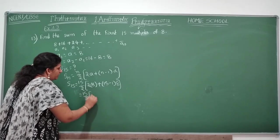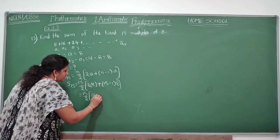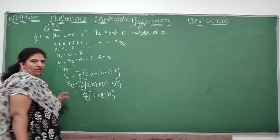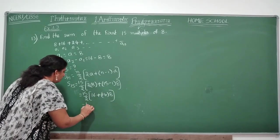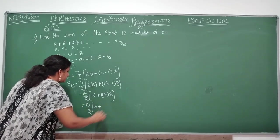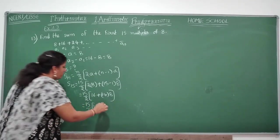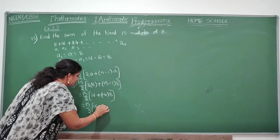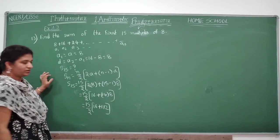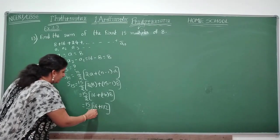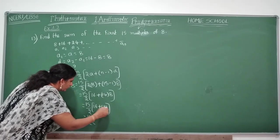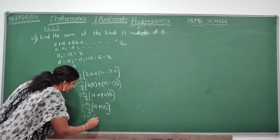S15 is equal to n by 2 into 2a plus n minus 1 into d. S15 is equal to 15 by 2 into 2 into 8 plus 15 minus 1 into 8. What's your d value? 8. So I have written here 15 by 2 into 2a is 16 plus 14 into 8. So now 15 by 2 into 16 plus, what is this one? 112.